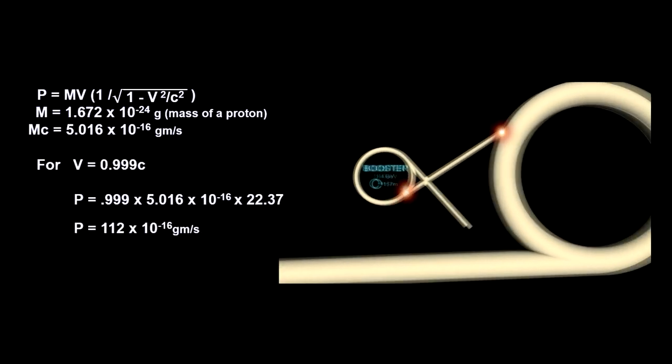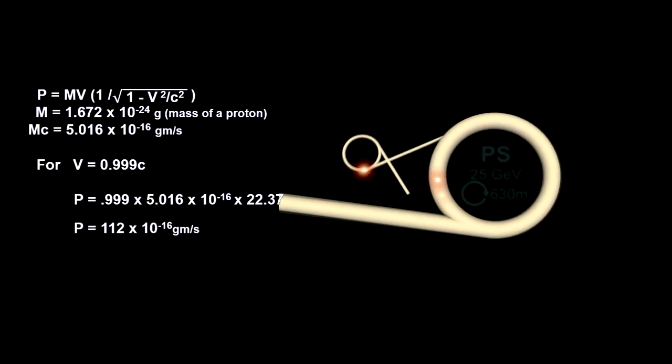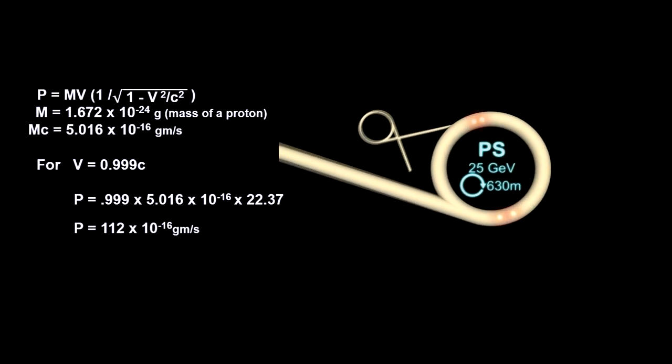The protons are then flung into the proton synchrotron. They circulate here for 1.2 seconds, reaching 99.9% of the speed of light. At this speed, their momentum has increased by more than 60 times.